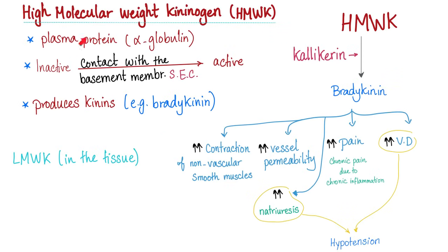High molecular weight kininogen is a plasma protein — it happens to be an alpha globulin. Contrast that with coagulation factors, which are beta globulins, and immunoglobulins or antibodies, which are gamma globulins. The high molecular weight kininogen produces bradykinin. We call these kinins.